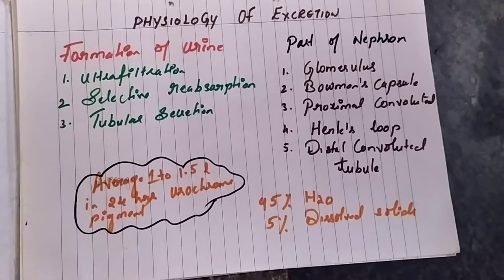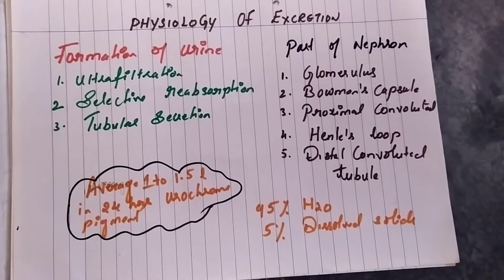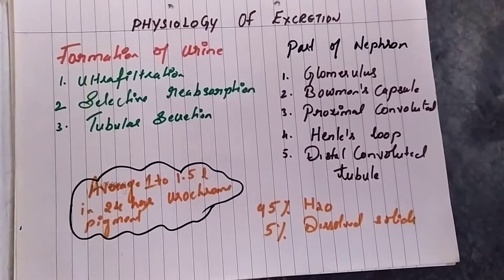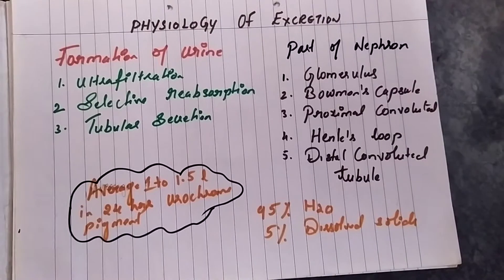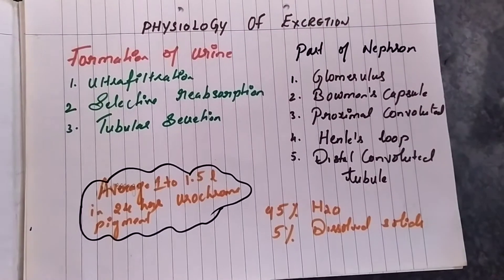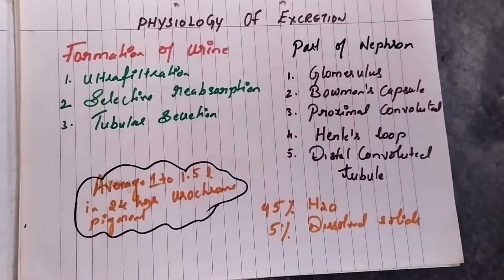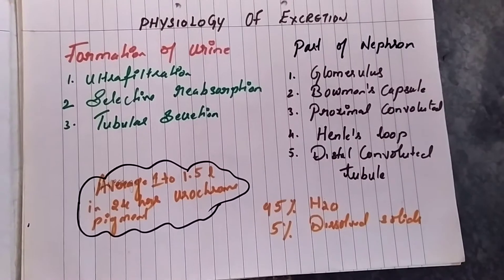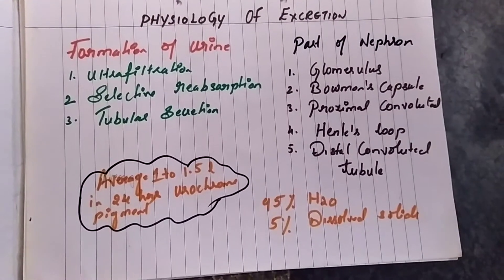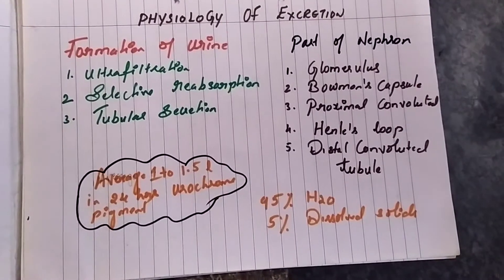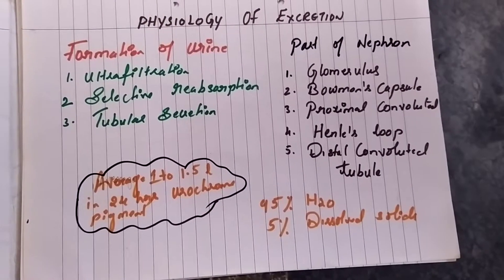You might all know that the average amount of urine produced in 24 hours is 1 to 1.5 liters, and it is colored due to the presence of the urochrome pigment present in the urine. So let us learn the details about the formation of urine.